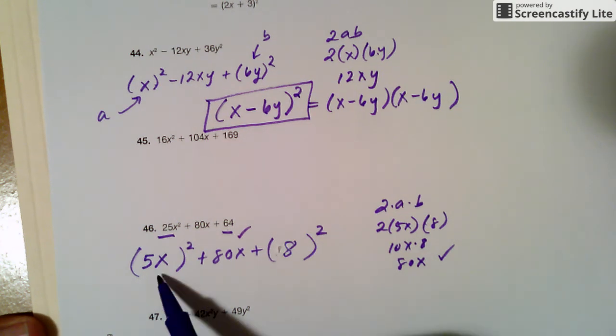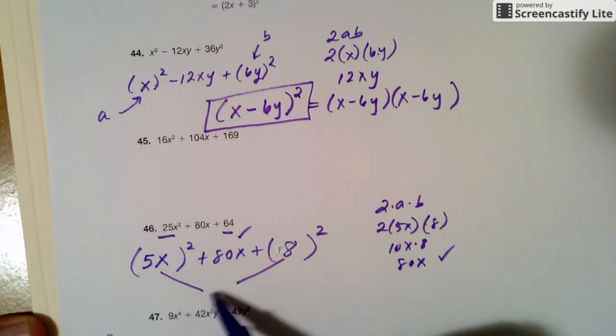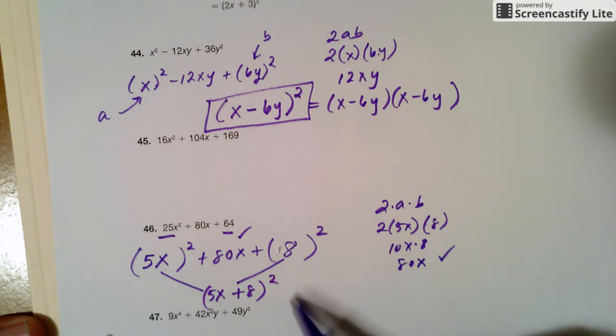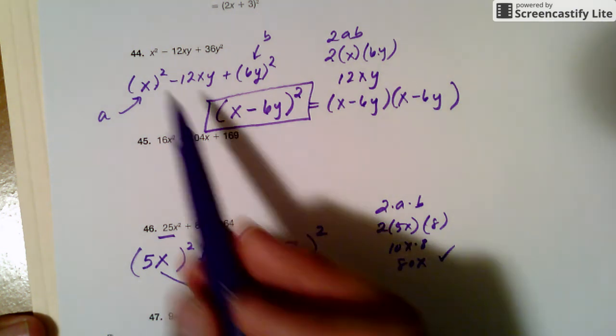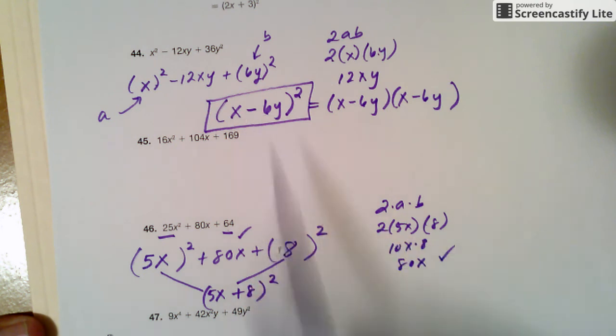It is a perfect square trinomial. So the rule says just take the 5, take the 8, put them together, and put a square. If there was a minus, I'll just put a minus, but this one has a plus. This one had a minus, so that had a minus. That's how we do the perfect square trinomial.